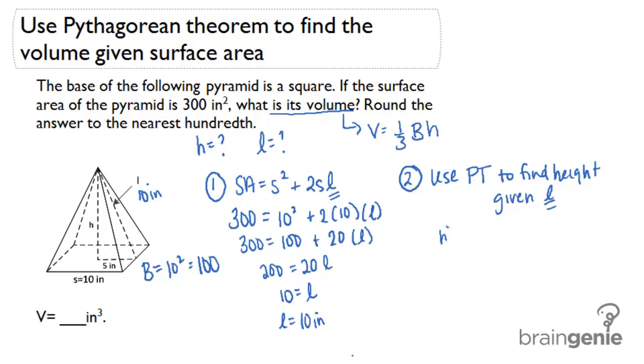If I do that, I'll have h squared plus 5 squared equals 10 squared. h squared plus 25 equals 100. h squared equals 75. 75 is another one of our numbers that are not perfect squares. So whenever I take the square root of 75, I get approximately 8.66. And I'm going to use 8.66 as my height in inches.